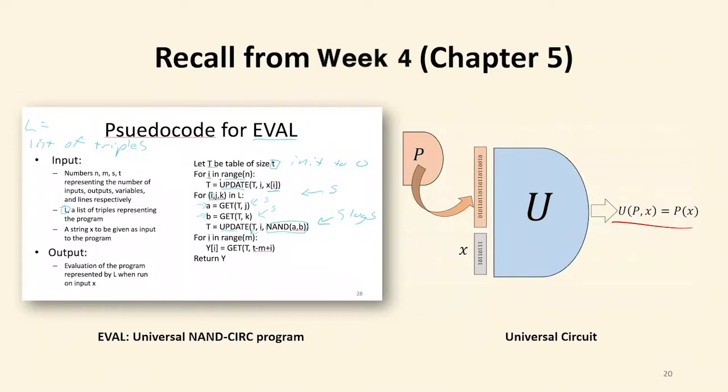A val is also a universal function. It takes a description of a function, in this case in the NAND CIRC language, still a finite function, and for any function up to that size, and in this case the size is just given by the size of the input, it can simulate that function.